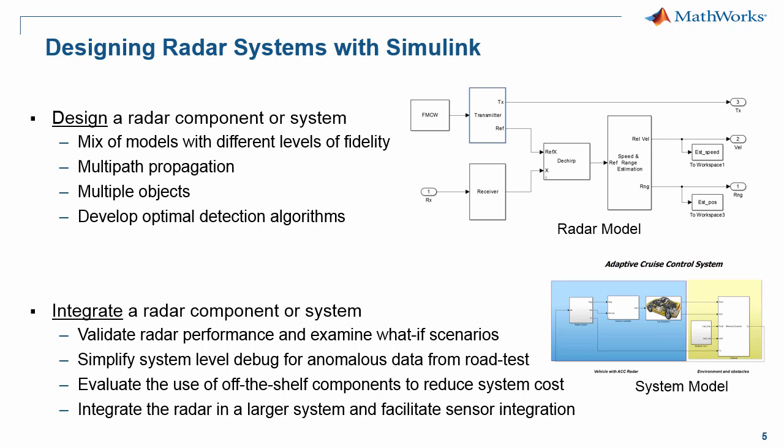In designing radar systems there are a few challenges. The first challenge is putting together a faithful model of the radar system itself. This includes modeling all the blocks in the radar, the propagation path, and being able to model the targets and objects that are in the field of view of the radar. It also includes building optimal algorithms for your application, whether it's for detection or any other related functionality. Once the radar component or system is developed, the next challenge is to integrate it into a larger application or system. As part of this phase of the workflow, you may validate the radar performance, look at what-if scenarios, and explore various configurations. When there's anomalous data in a road test, you have a model to go back to and see where the problem might be.